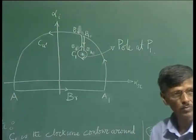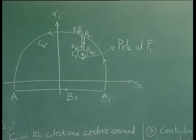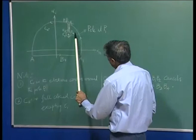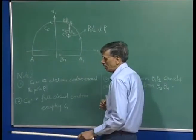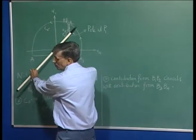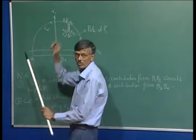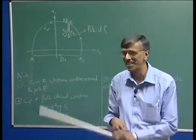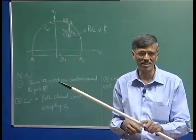What we are saying then is: if we go to alpha equal to infinity — what does that mean? Alpha is a complex quantity, so its modulus going to infinity is like a radial vector with the radius going to infinity. So alpha going to infinity is actually the point at infinity, and that is nothing but a circle.